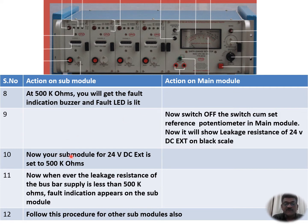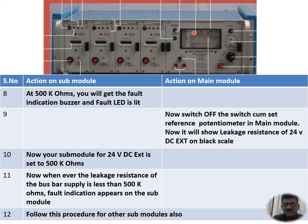Now the submodule for 24 volts external is set to 500 kilo ohms. Whenever the leakage resistance of the bus bar supply is less than 500 kilo ohms, a fault appears on the submodule. For example, if it was presently 5 mega ohms but the cable slowly deteriorates after 6 months or 1 year — more leakage or a defective conductor — when leakage reaches 500 kilo ohms and the module is also set to 500 kilo ohms, you will get the fault indication. This procedure should be adopted for all submodules.